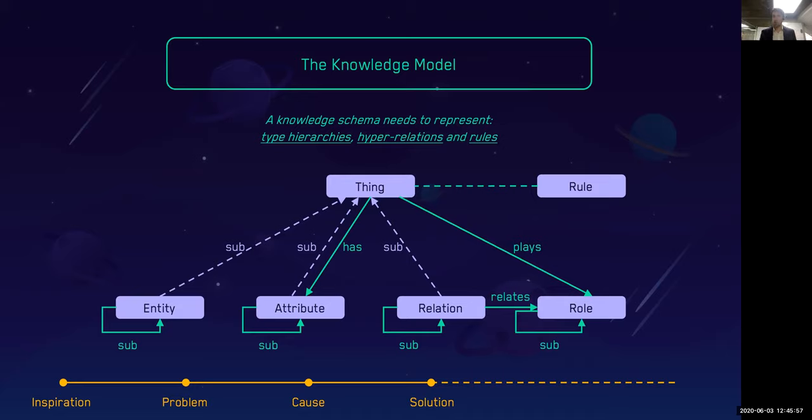To introduce the model that forms the basis of the entire language—this is the knowledge model. We say that a knowledge model needs to be able to represent type hierarchies, hyper-relations, and rules. Everything in Graken fits this model, and we say there's nothing you cannot model using this. In fact, this is a direct implementation of the enhanced entity relationship model, and specifically means a concept level schema.